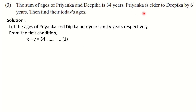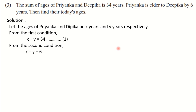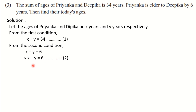Now the second condition: Priyanka is elder to Deepika by 6 years. Priyanka's age is X and Deepika's age is Y. Priyanka is elder, meaning the value of X is bigger, and the difference between them is 6. From the second condition we can write X = Y + 6. For those who understand that the difference between their ages is 6, you can directly write X − Y = 6. This is equation 2.